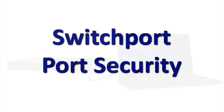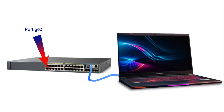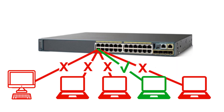Here's the short of it: we configure a port or interface to only allow certain MAC addresses to connect. Anything else that connects to that port and isn't on the list of allowed MAC addresses will cause the port to shut down, stop allowing connections until reset, or simply drop packets and frames from all devices except those with an approved MAC address.